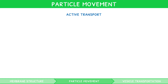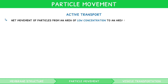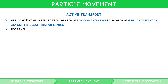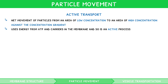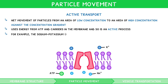Active transport is the net movement of particles from an area of low concentration to an area of high concentration, against the concentration gradient. It uses energy from ATP and carriers in the membrane, and so is an active process. For example, the sodium potassium ATPase pump. Unlike the other processes, you can be asked to describe the mechanics of active transport at the membrane.